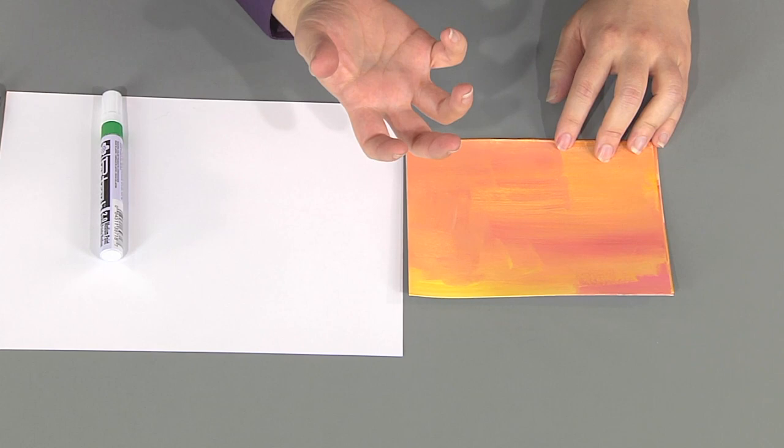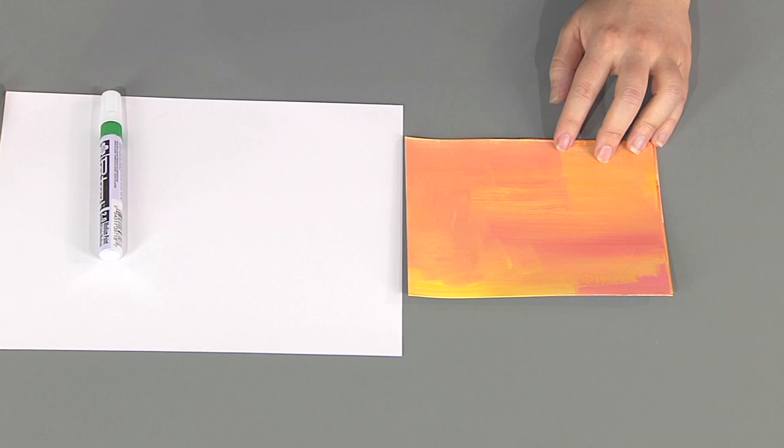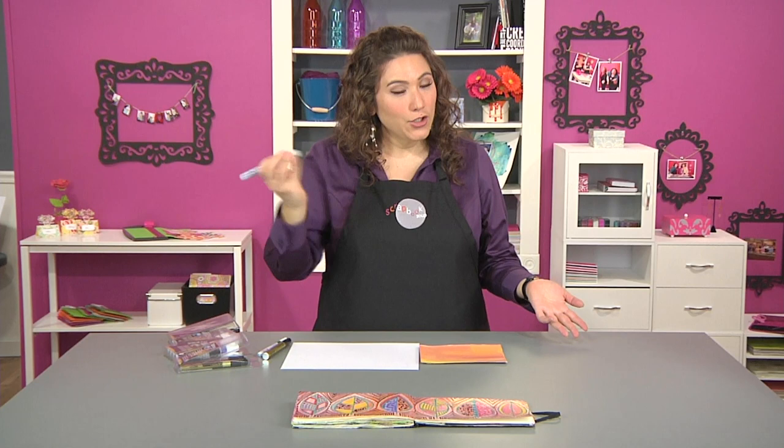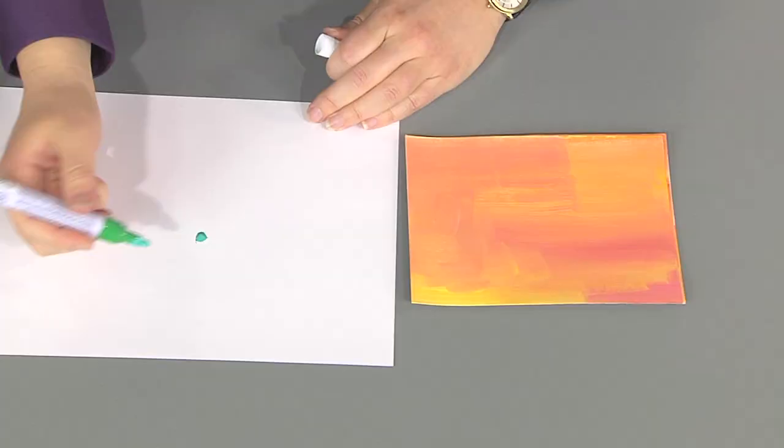So first rule of paint pens: you need to shake it, and you can hear that little ball moving in there. Then you want to make sure to have a piece of scrap paper and to press in the tip. You can see that's way too much ink. There you go, it's nice and soupy, so now I'm ready to go.